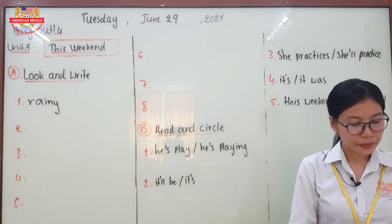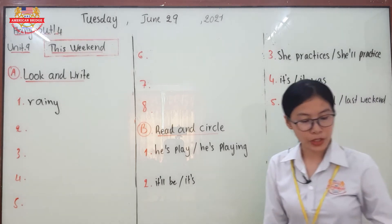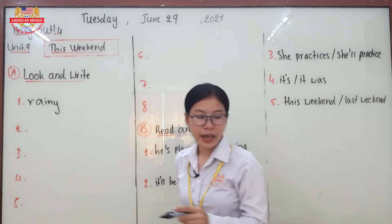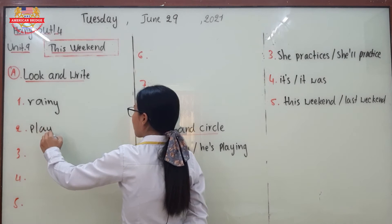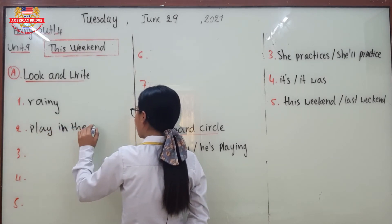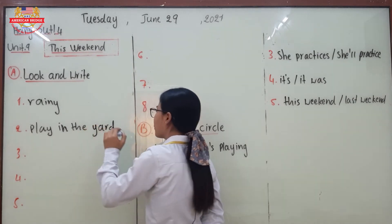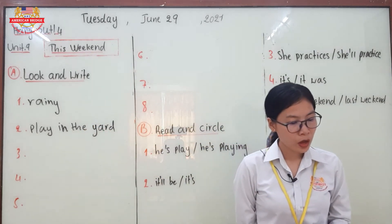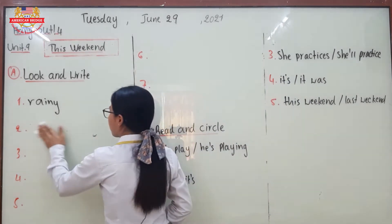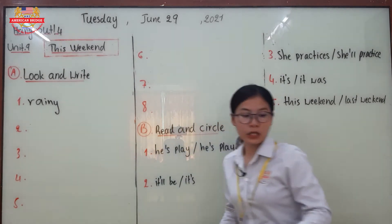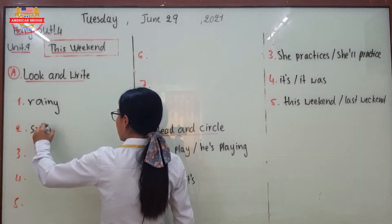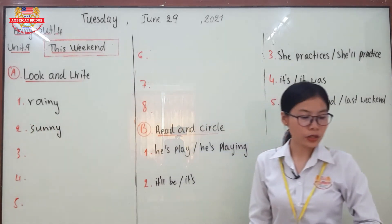Number two — what picture is it? This is a picture of playing, or we can say playing in the yard. The first picture points to rain, and the second one points to Brian playing in the yard. Number three should be the picture of sunny — you can see the sunshine.